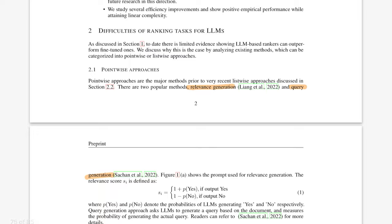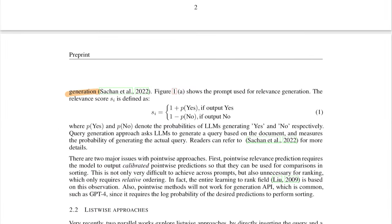They say the pointwise relevance generation requires the model to output calibrated pointwise predictions so that they can be used for comparison in sorting. The idea is like if you change the prompt, and the new score that you get with prompt one and prompt two - are these comparable, or do you want to normalize them further?